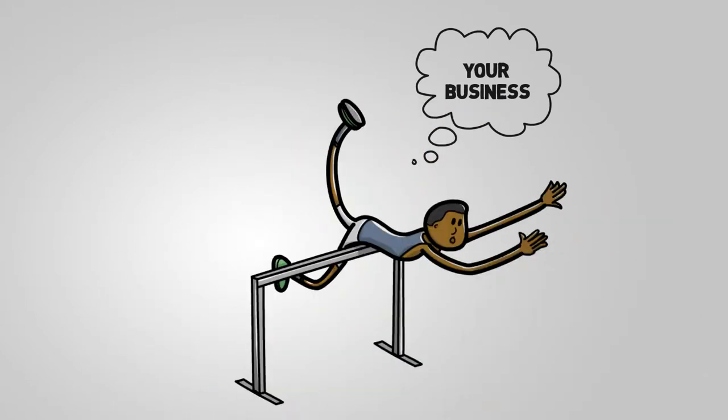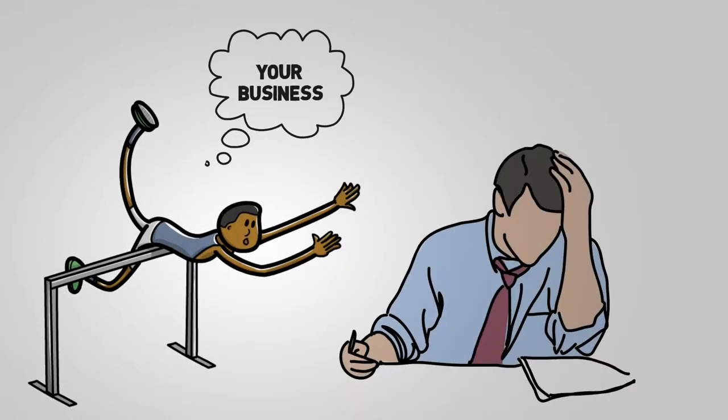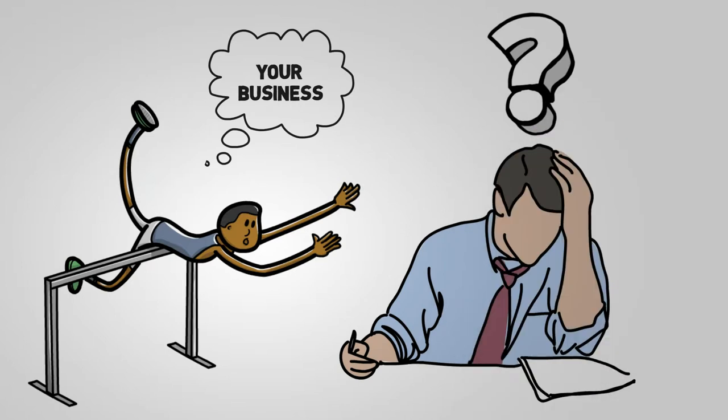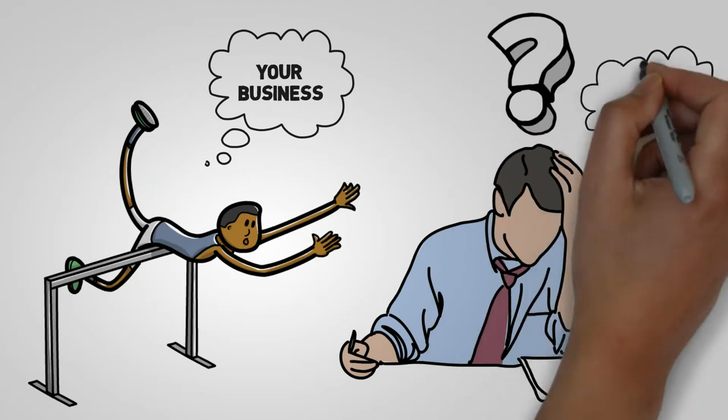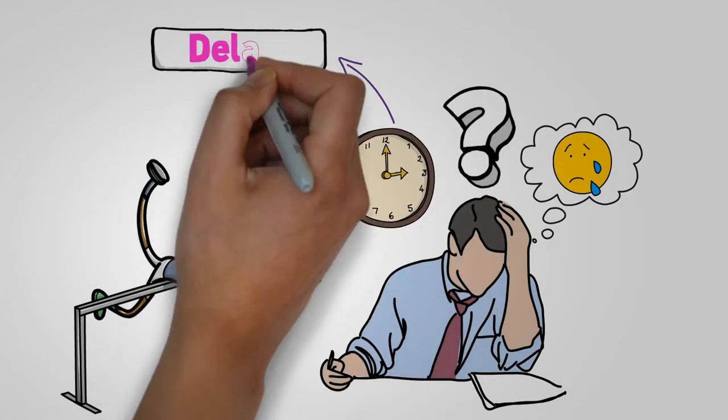Paperwork piles up. Important dates get missed. Operational silos mean not everyone is going in the same direction. Business technology does not always talk to each other. Work is lost or has to be redone. Compliance takes up valuable time. Client service is hampered by delays.